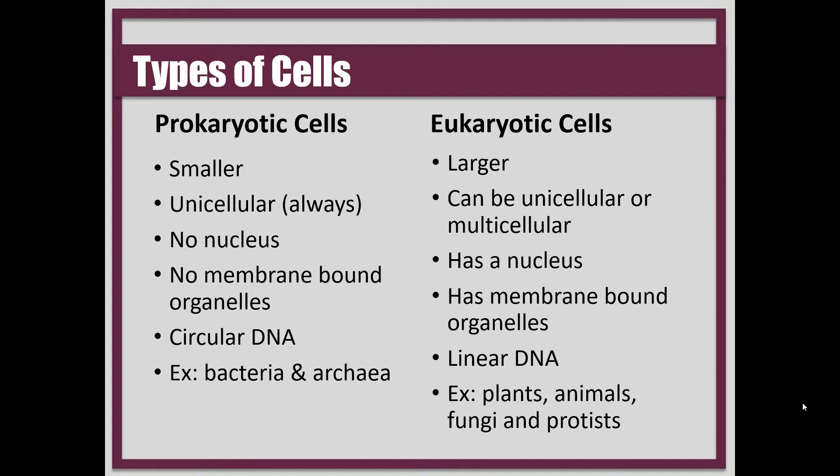Now, we have two different classifications for cells. Cells are either prokaryotic or eukaryotic. If we are talking about them as nouns, then we say prokaryote or eukaryote. But if we're describing the cells, we say prokaryotic and eukaryotic. There are some similarities between prokaryotic and eukaryotic cells, and we're going to jump into that in the next slide, but there are also some differences between the two.